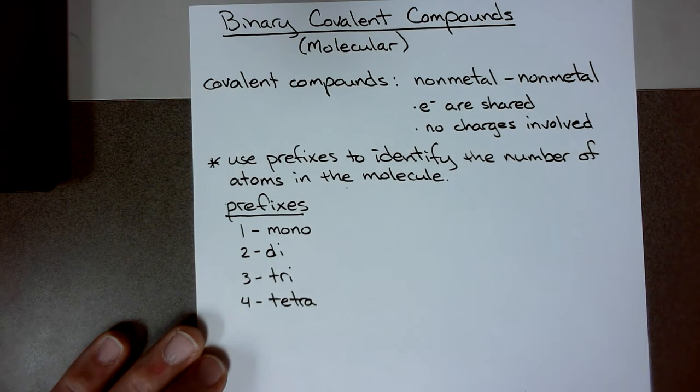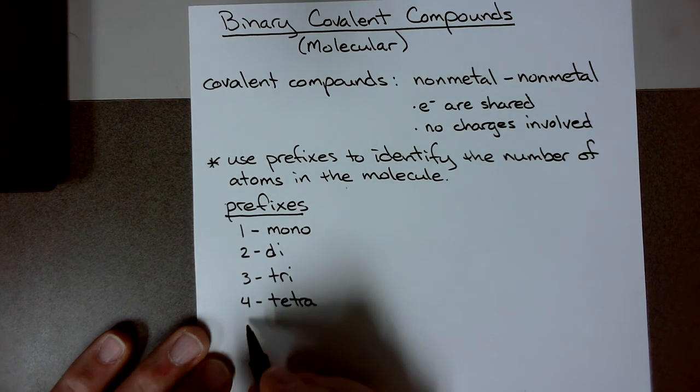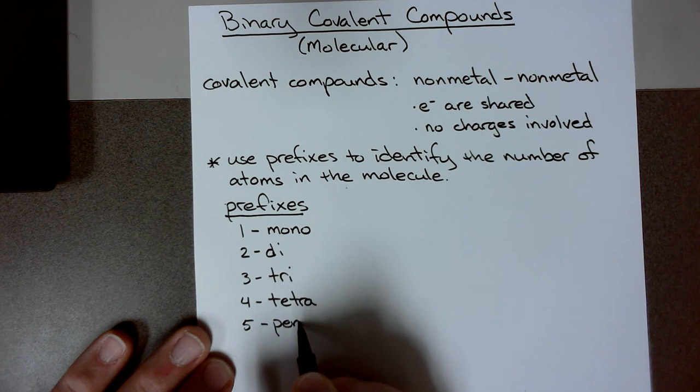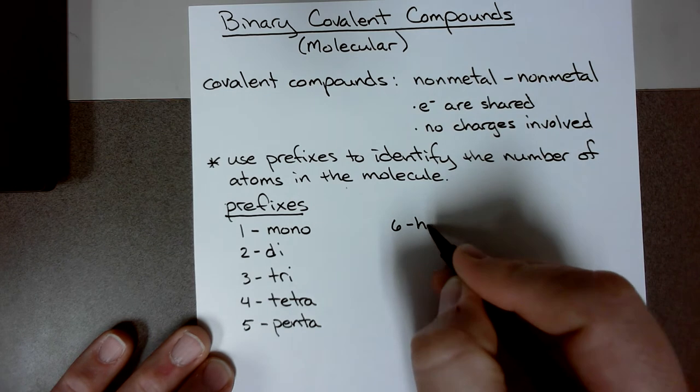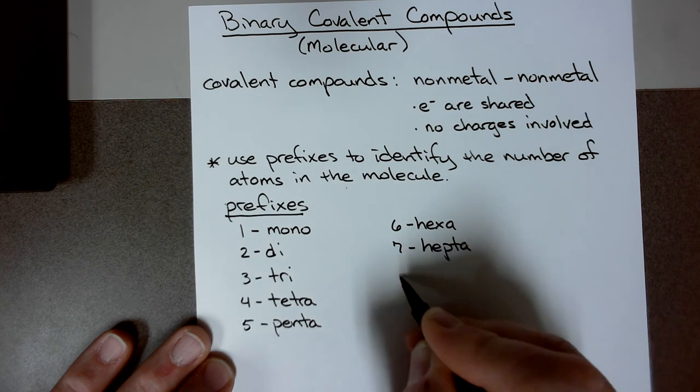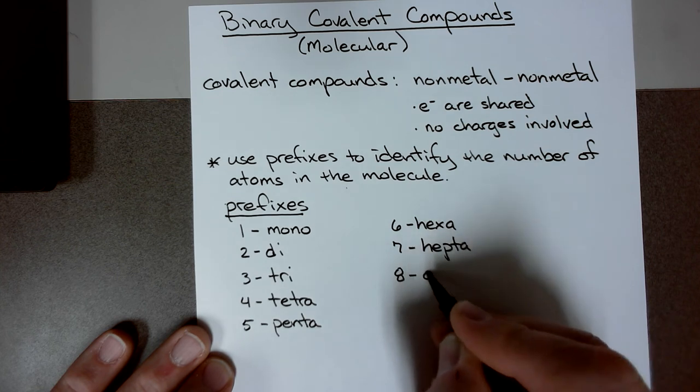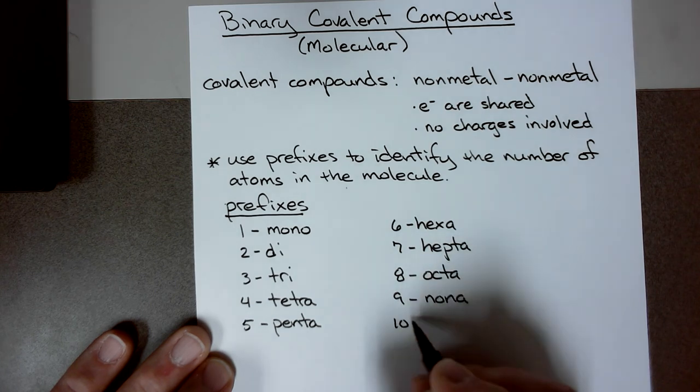The easy way to remember tetra as four is Tetris. In Tetris, there's always four blocks falling down in different shapes. Five is penta, like in the pentagon. Six is hexa. Seven is hepta. Eight is octa. Nine is nona. And ten is deca.